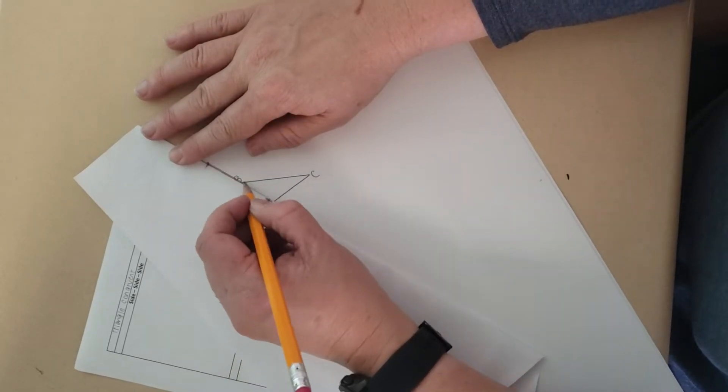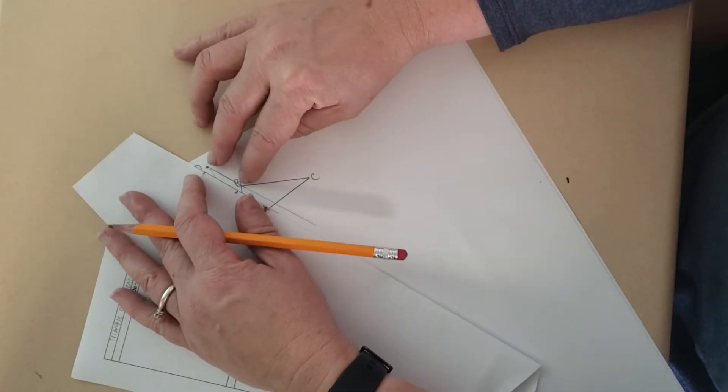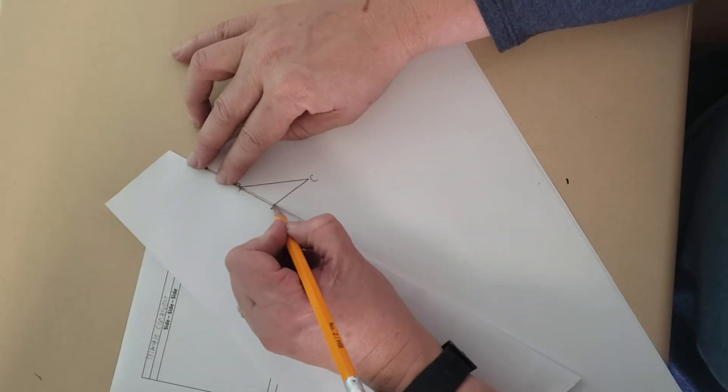I'm drawing lightly. I'm marking. That is the exact distance from P to B. Here. That is also the exact distance from P to B.